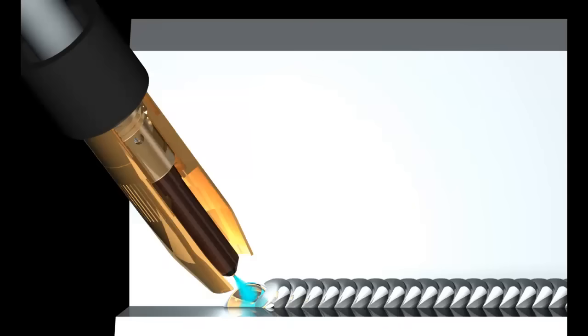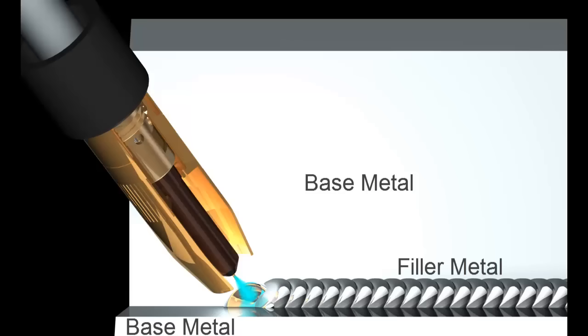The metal in these parts to be joined is called the base metal, and the metal that comes from the melting wire electrode is called filler metal. MIG welding always adds filler metal to the joint.